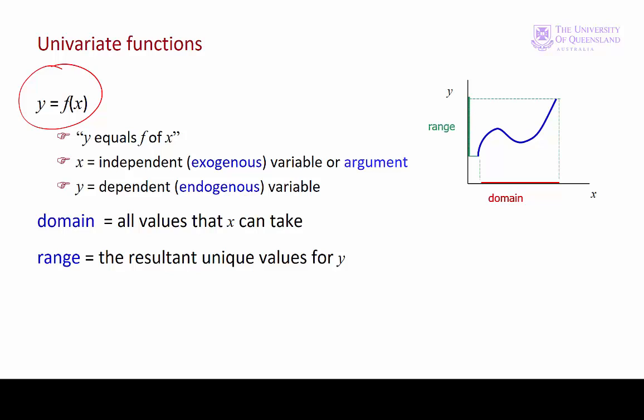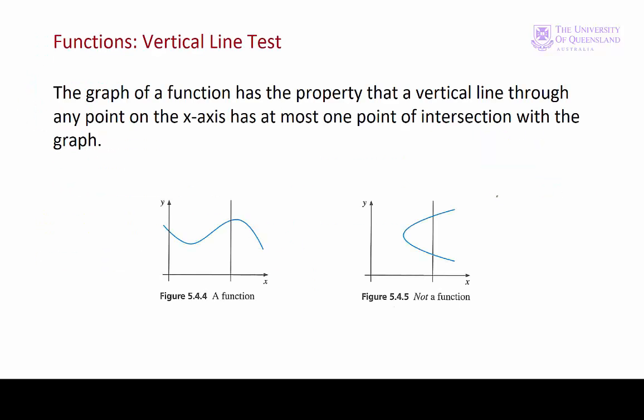This property that each value of x has a unique y gives us the vertical line test for a function. On the left, we can draw a vertical line through any point and we have just one value of y or f of x. But where a vertical line cuts the graph in two places, such as on the right, it's definitely not a function. We would have an equation to the curve, but that equation is not a function.